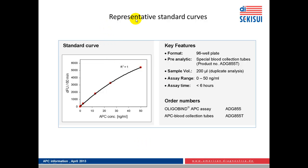Here you see a representative standard curve on a 96-well microtiter plate. It is important that blood for determination of APC in this assay is collected with specific blood collection tubes that contain a reversible inhibitor that prevents inactivation of APC. This reversible inhibitor is then washed away after binding of APC to the plate. The special blood collection tubes have product number ADG855T. The sample volume is 200 microliters, duplicate analysis is recommended, the assay range is 0 to 50 nanogram per milliliter, and the assay time is less than 6 hours.